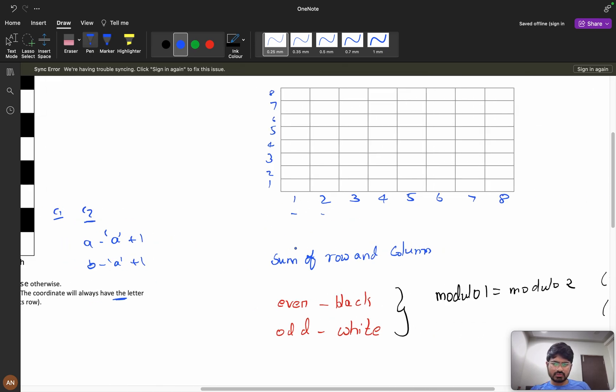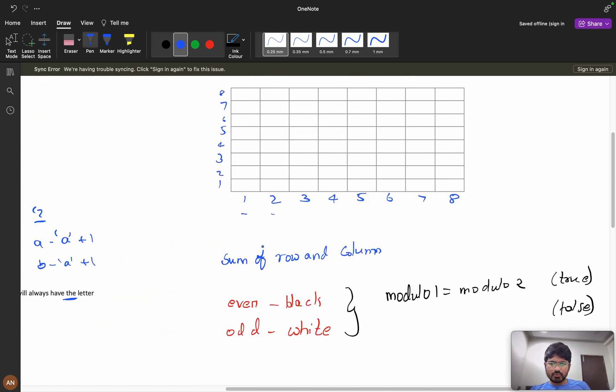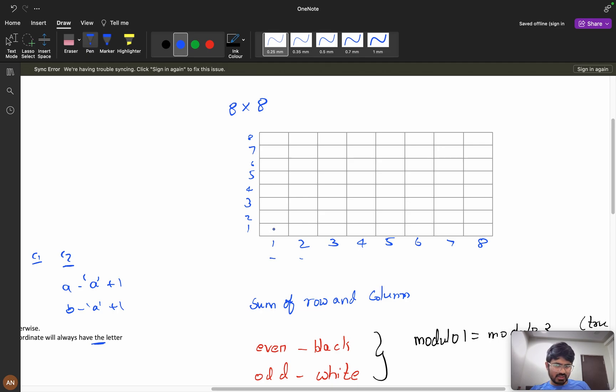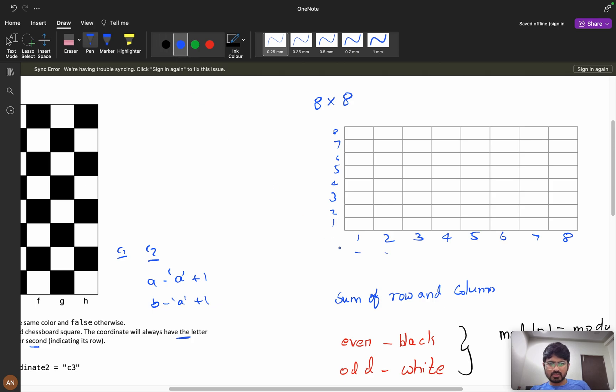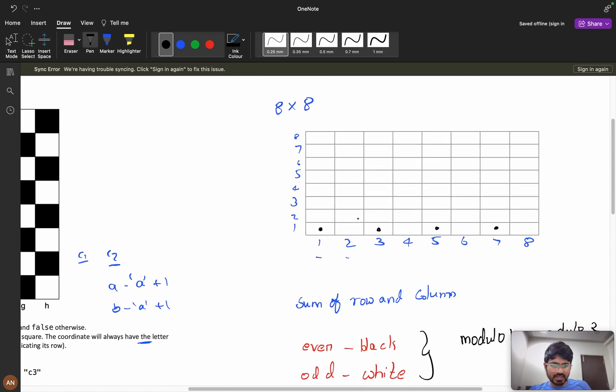Now if you observe, 1 plus 1 is even, and it is printed with black. 3 plus 1, even, black. 5 plus 1, even, black. 7 plus 1, even, black. Then if you see here, 2 plus 2, yes, still it is black.